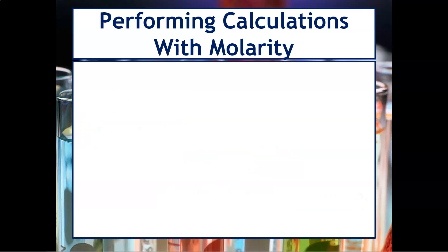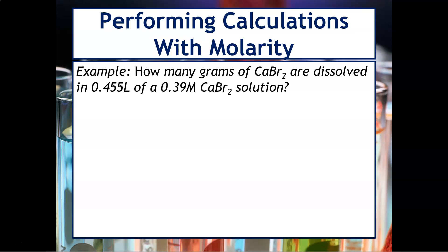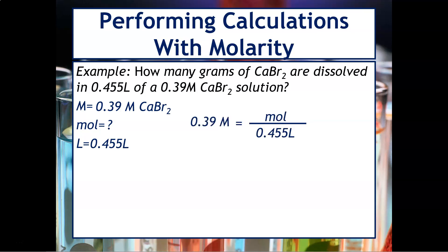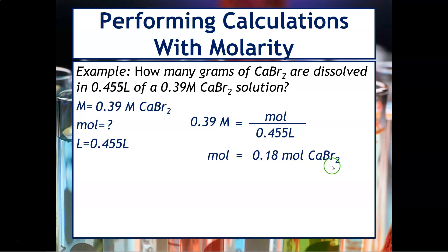Let's try another one: how many grams of calcium bromide are dissolved in 0.455 liters of a 0.39 molar calcium bromide solution? List the variables: molarity is 0.39 M, volume is 0.455 liters, and moles is our unknown. Solving for moles by multiplying 0.455 liters times 0.39 molar gives 0.18 moles of calcium bromide.